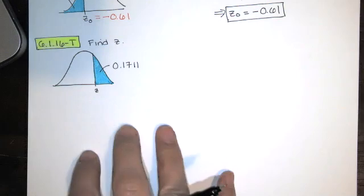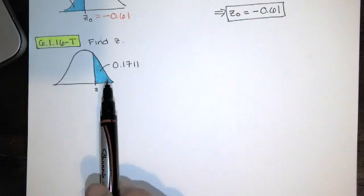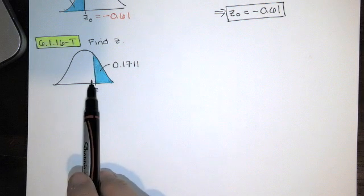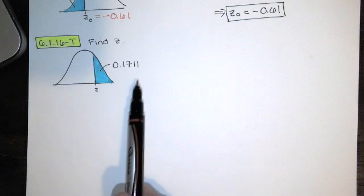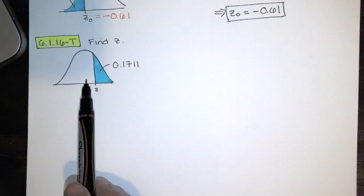Now, if we look at our table of z-scores, both positive and negative z-scores, you're never going to find areas to the right. You're only going to find areas to the left. So if I want to find this z-score, I need to find this area to the left first.